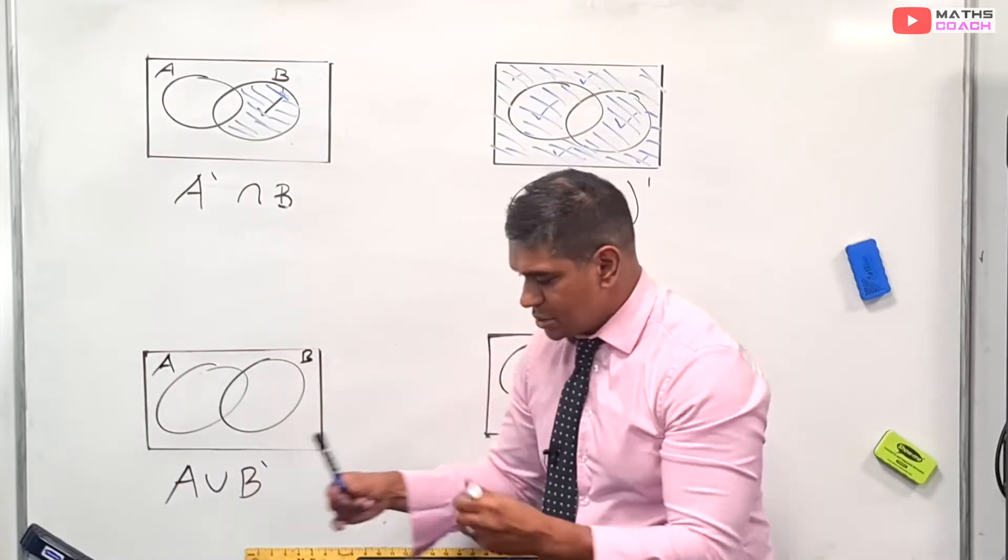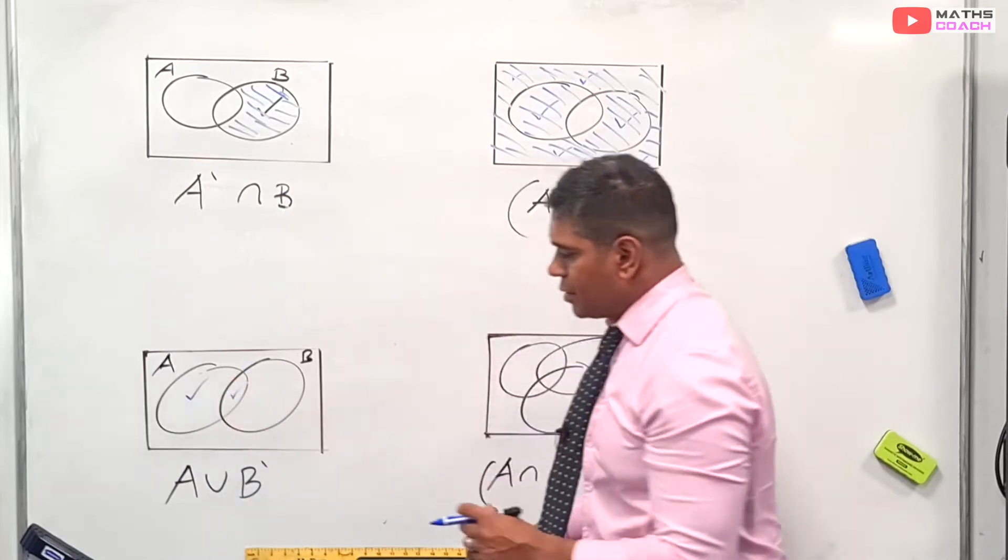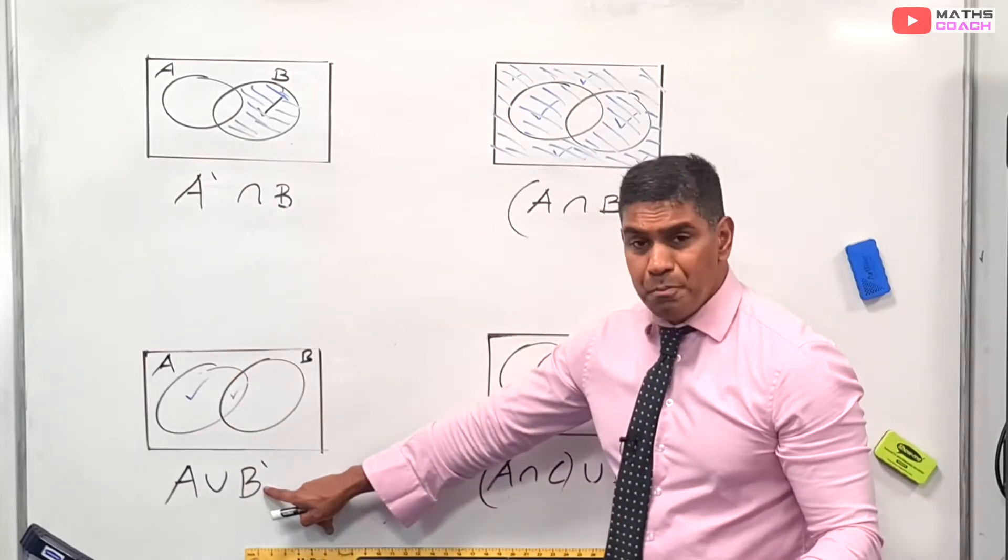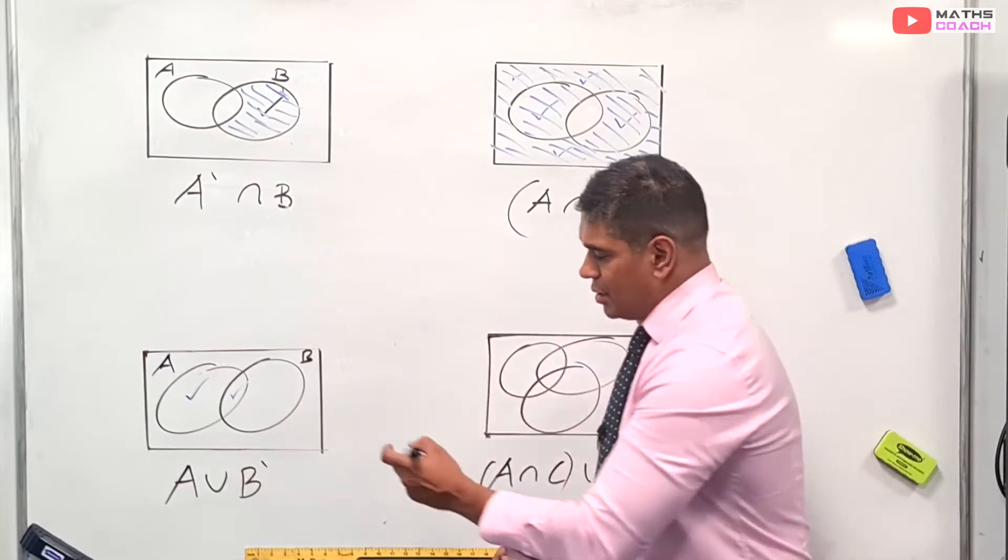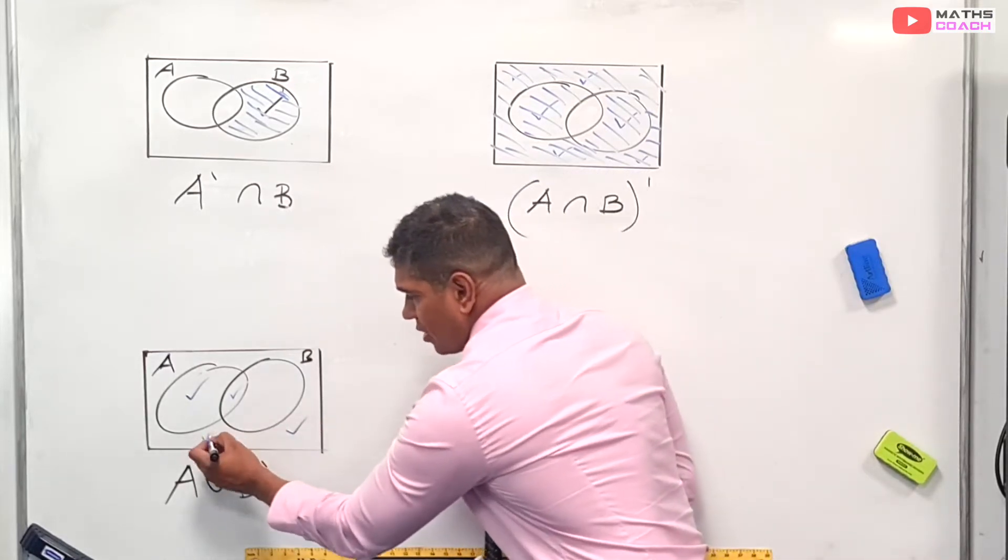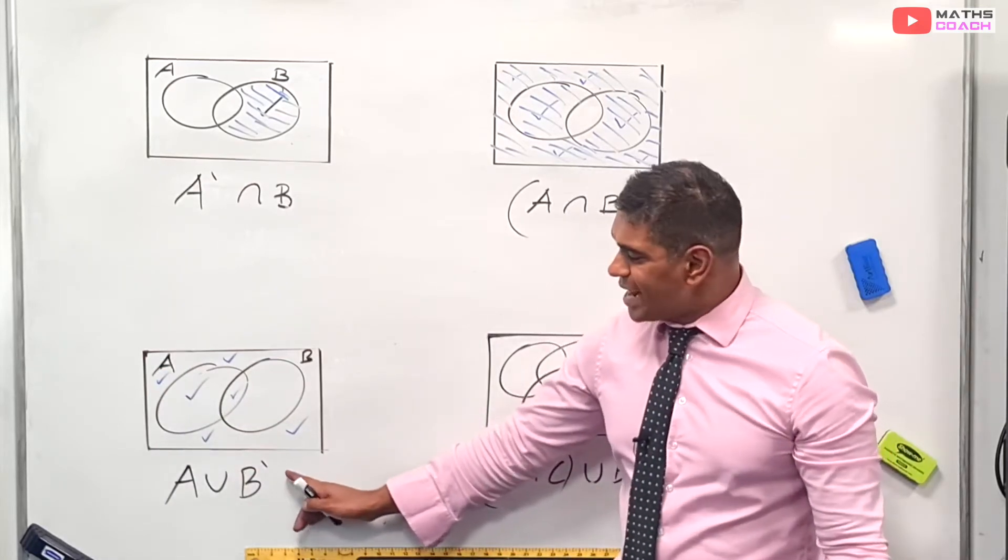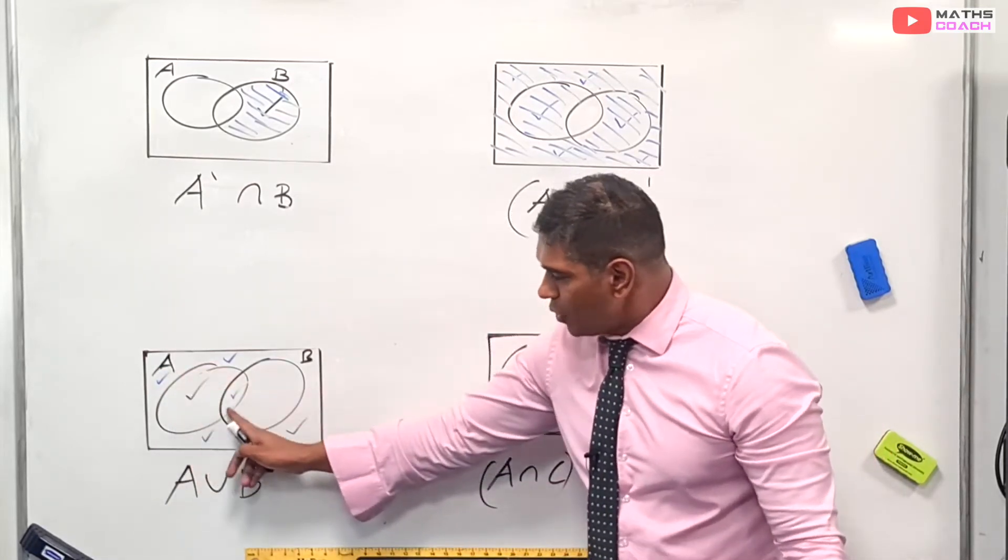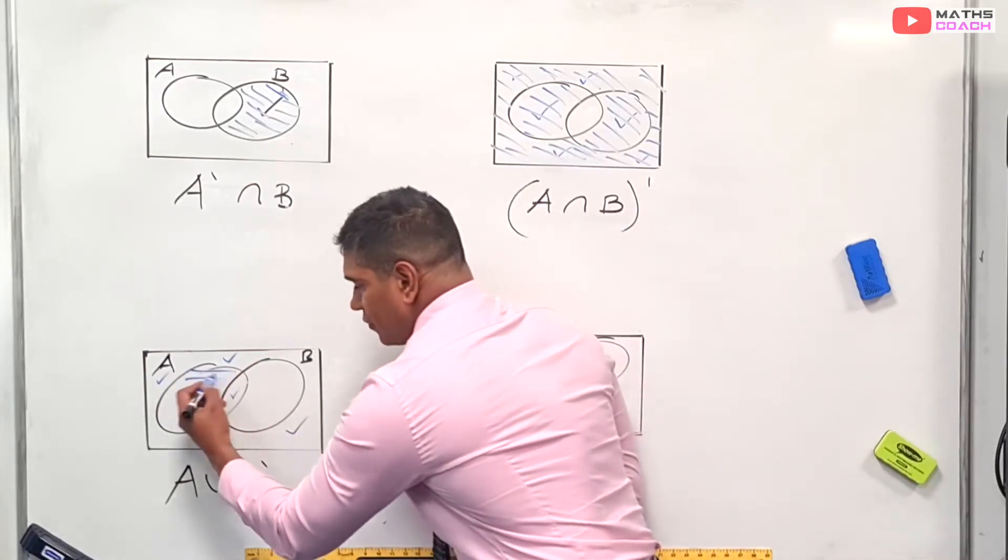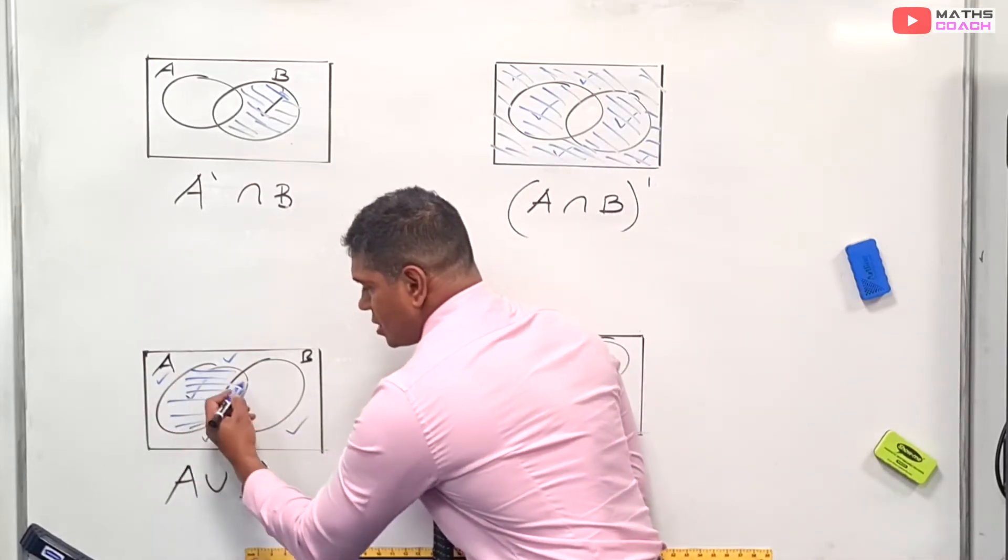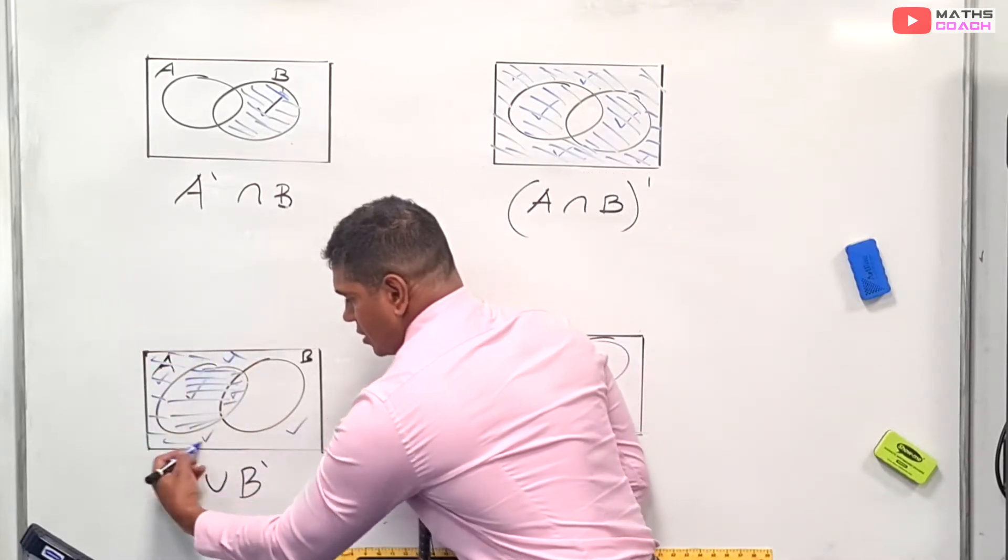That means I can have A there or there, and it says B', or B' means outside B. So it can be there or there or there or there. In other words, if we shaded all of that in, I can have all of A and not B. So we're going to have all of this shaded in. Don't forget, we can shade in this bit here.